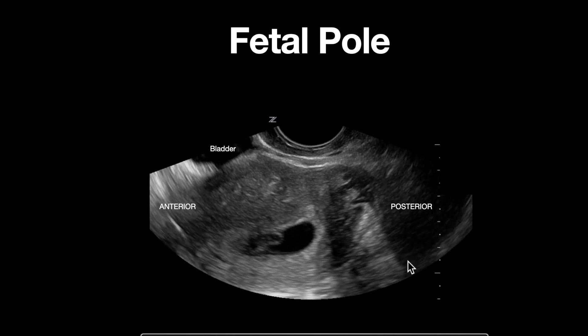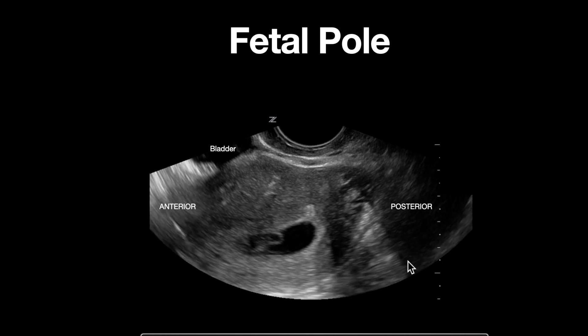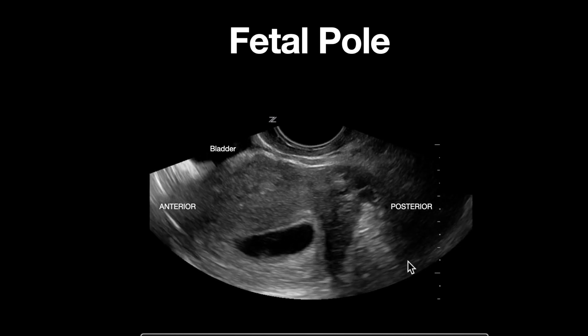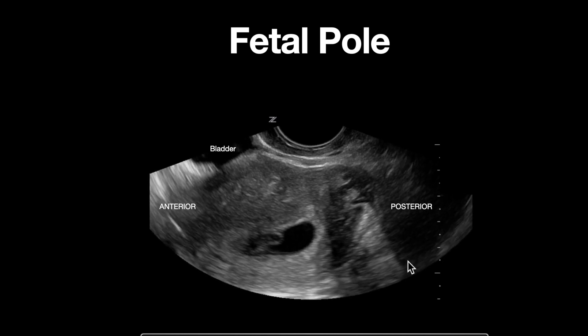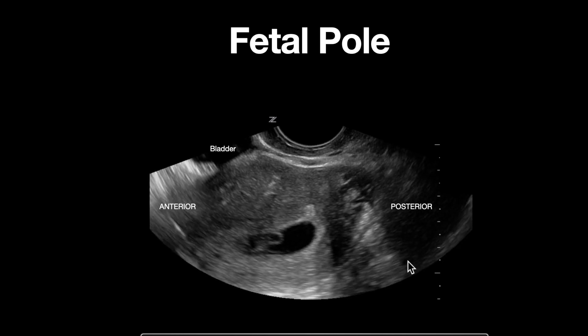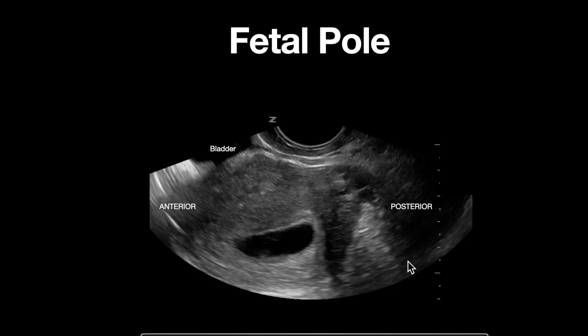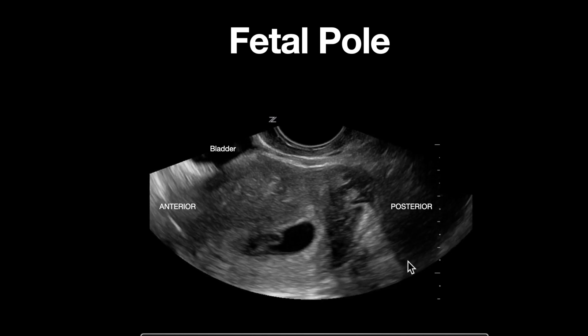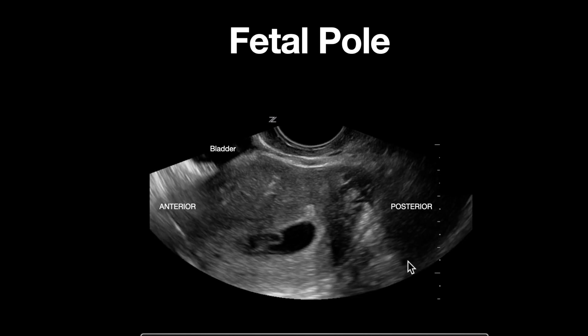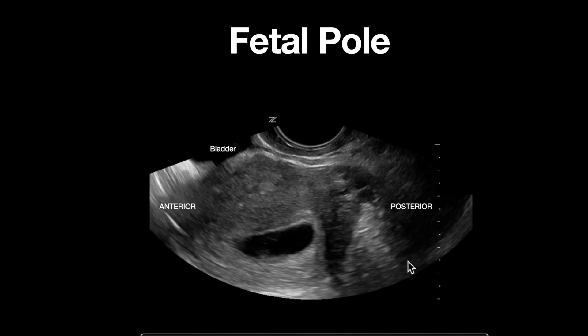A fetal pole should be able to be visualized by transvaginal ultrasound by around six weeks, whereas with transabdominal ultrasound it may not be seen until 6.5 to 7 weeks.